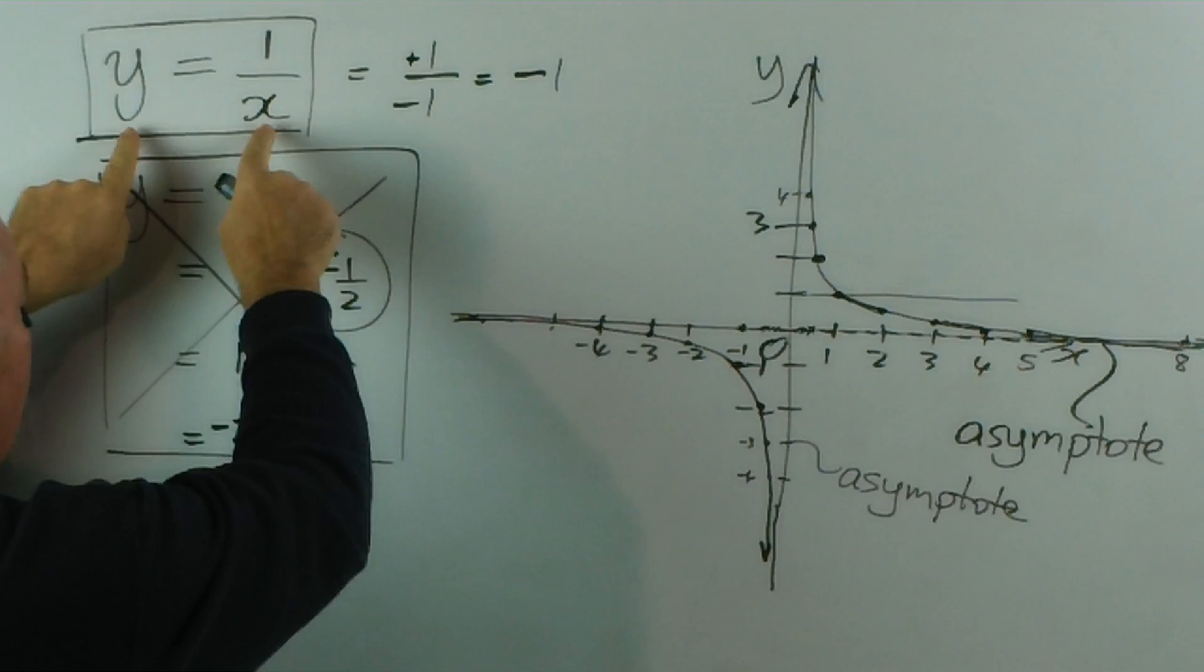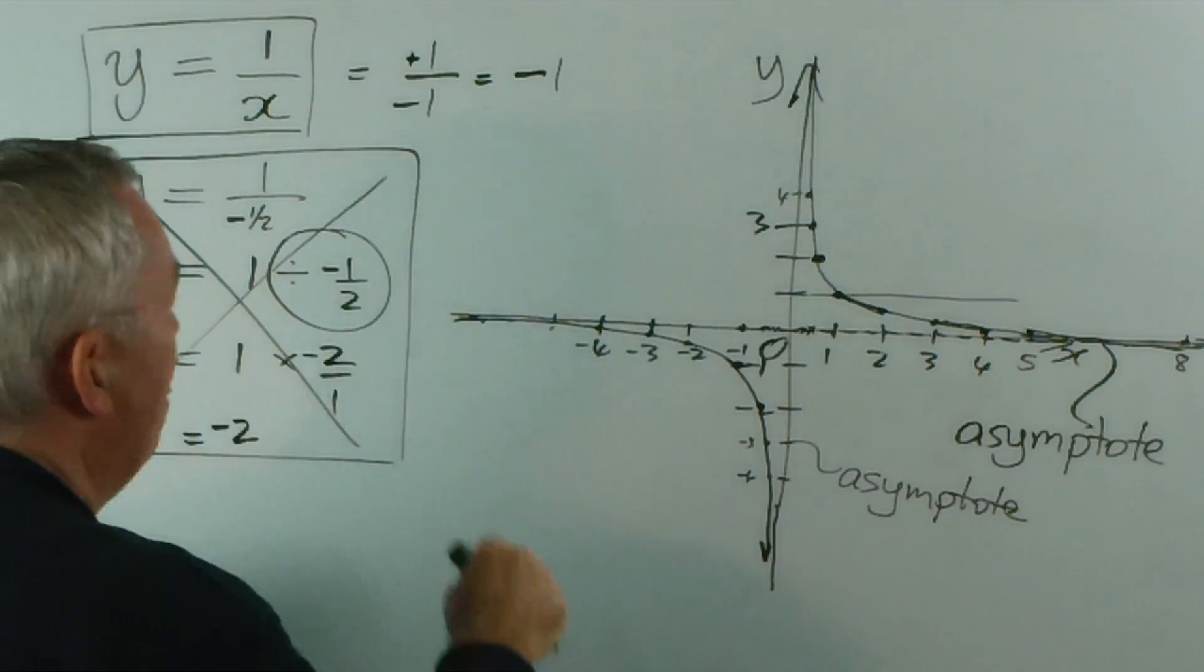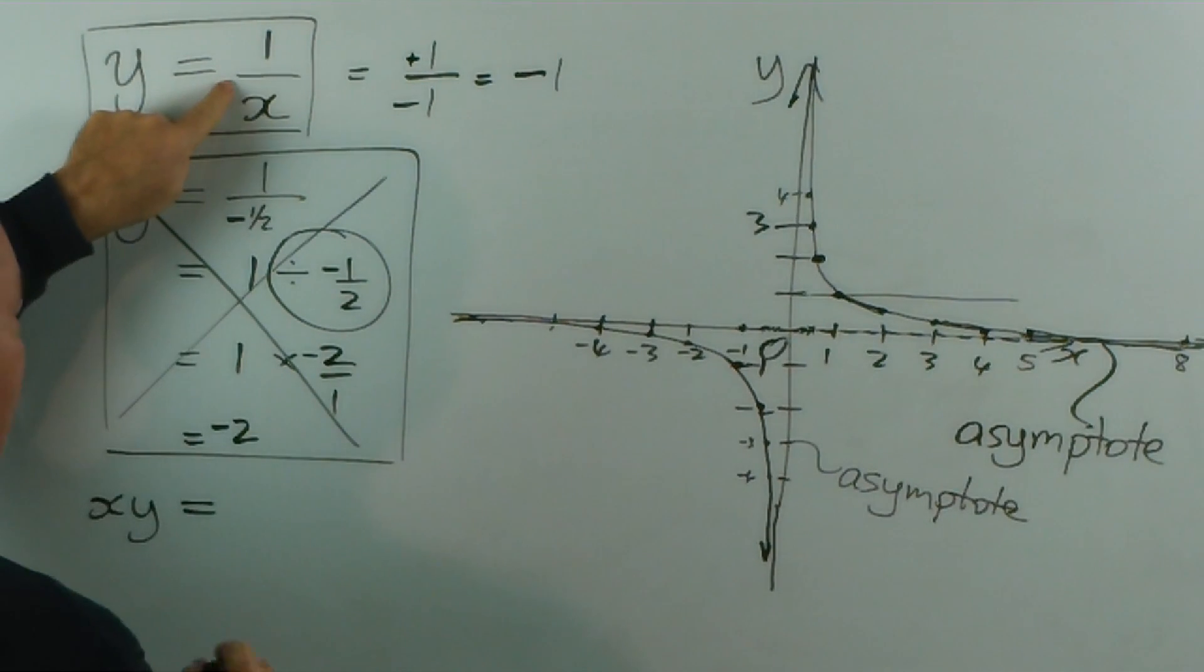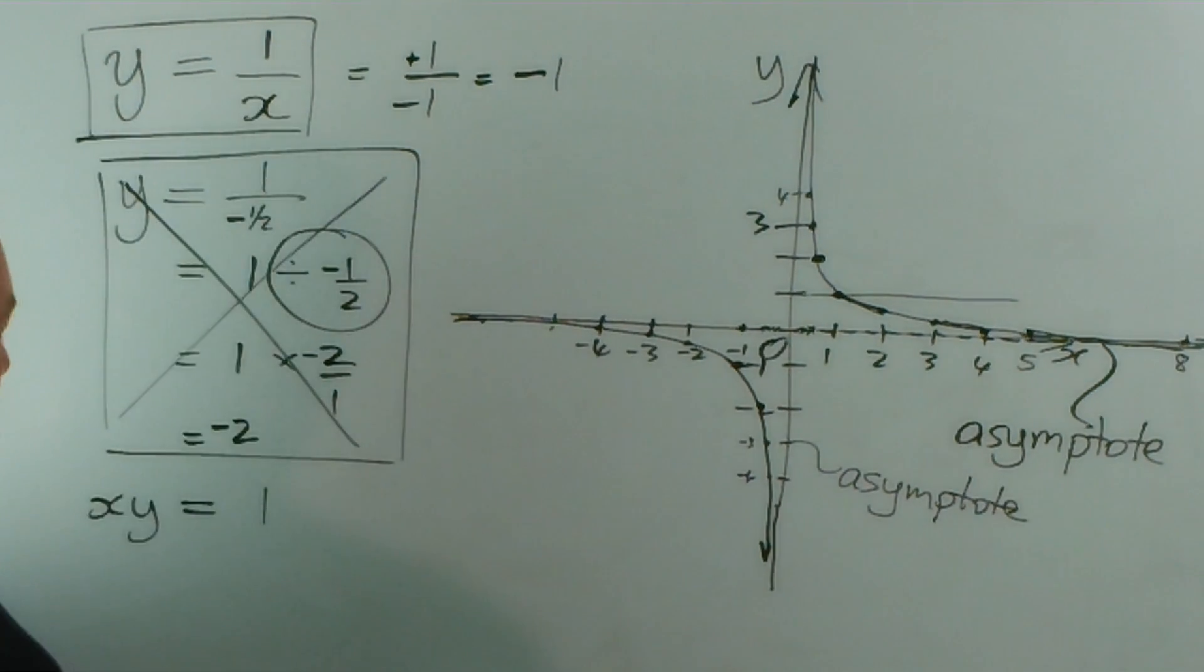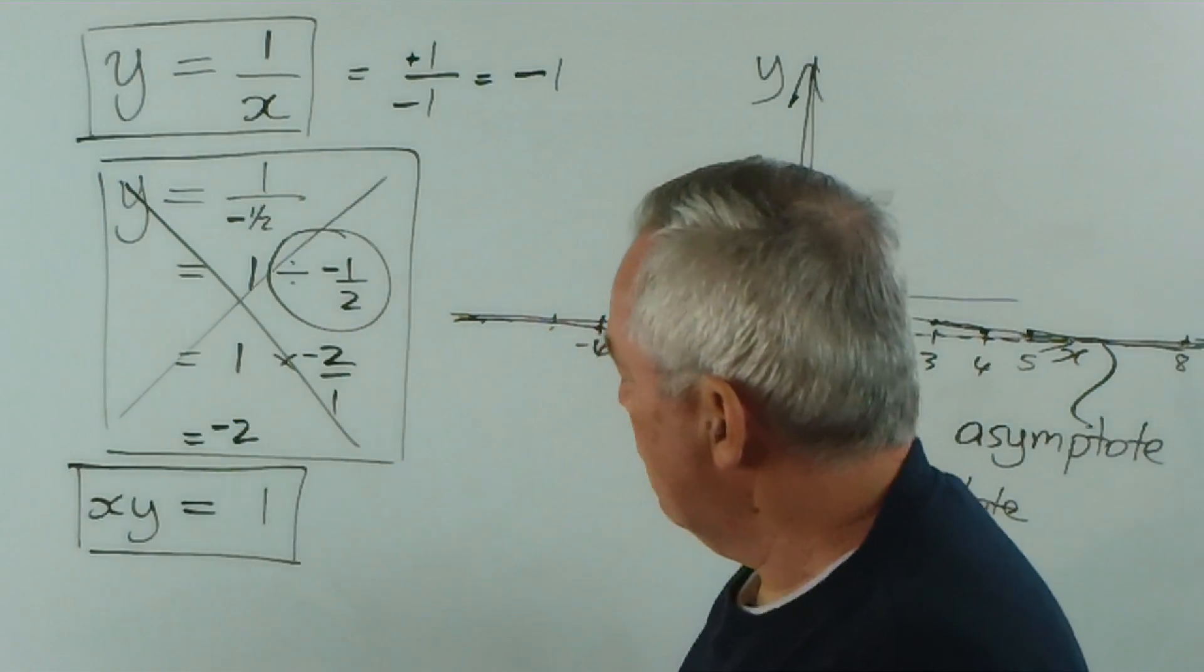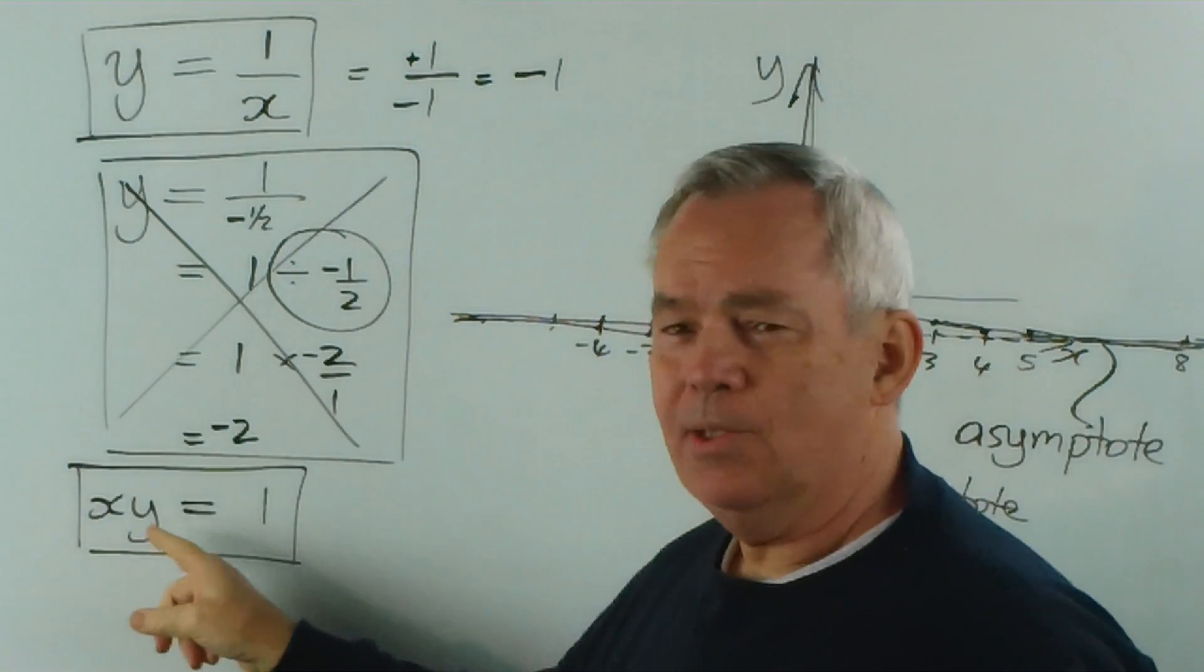And I want us to multiply both sides of this equation by x. So if I multiply this by x, I get xy. And if I multiply this by x, I get 1. And this equation means the same as that.